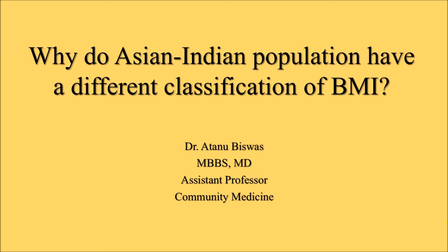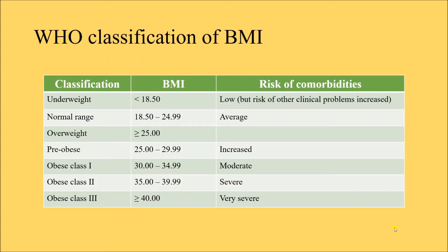Why does the Asian Indian population have a different BMI classification? We already know there is a conventional WHO classification and also a separate classification for Asian Indians. In the WHO classification, the middle column shows different BMI levels: less than 18.5 is underweight, 18.5 to 24.99 is normal, 25 and above is overweight. Pre-obese is 25 to 29.99, obesity is 30 and above. Obese class 1 is 30–34.9, class 2 is 35–39.99, and class 3 is 40 and above. The third column shows risk of comorbidities at each BMI level.